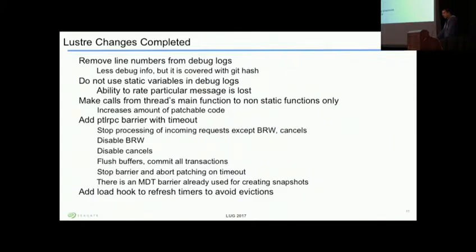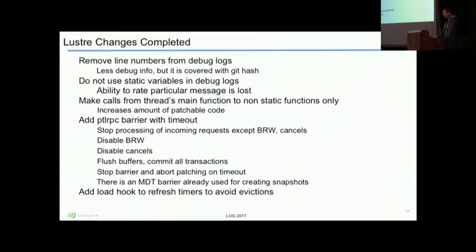Finally, we added a PTL RPC barrier with timeouts. The steps were: stop processing of incoming requests except BRW and cancel, then disable BRWs, disable cancel, flush buffers and all commits, stop barrier, and abort patching on timeout. Once these steps are done, modules are inserted. We also add a hook to refresh timers. We are also experimenting with changing the timers up front and then starting the PTL RPC barrier.